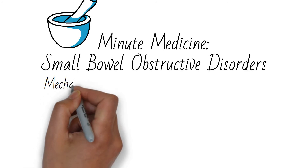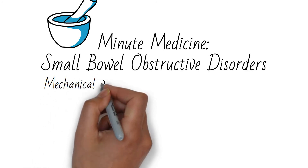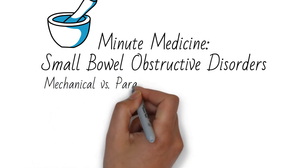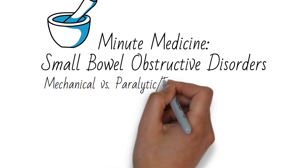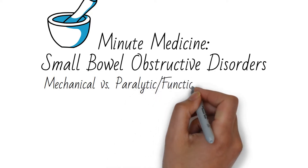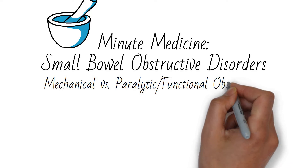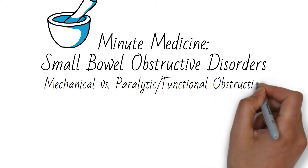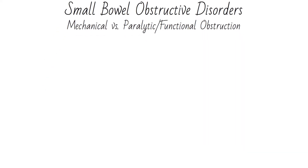We're going to talk about everyone's favorite topic: small bowel obstruction. There are two categories — mechanical, which is a physical obstruction, and functional obstruction, where the bowel stops peristalsing. This is also known as ileus.